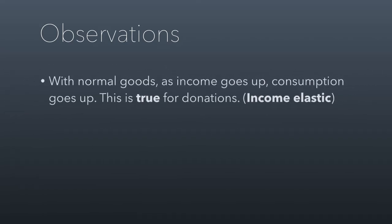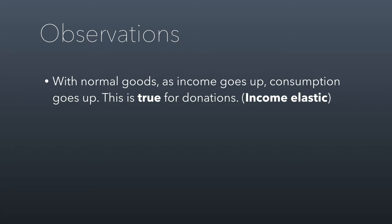Let me describe a few implications of this. A normal good is something that you buy more of as your income goes up. You buy bigger houses, fancier cars, more clothing — those are all normal goods. Donations are also normal goods in this sense — donations tend to increase as people make more money. Another way to describe that is that they're income elastic, meaning they respond well to changes in income. So donations go up as income goes up, and so far donations look like a normal good.